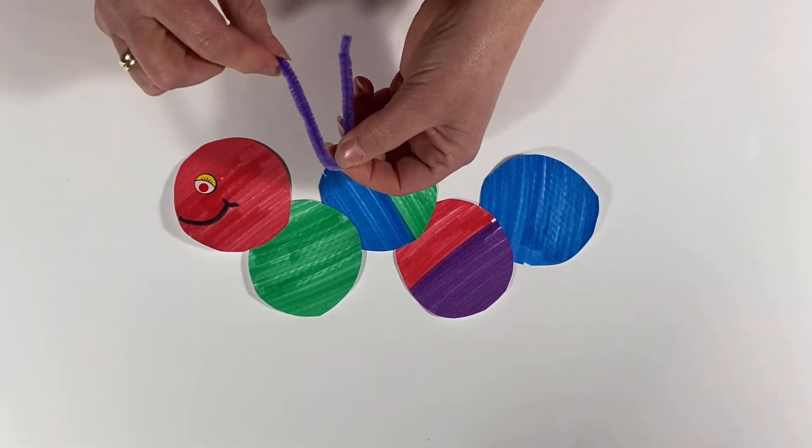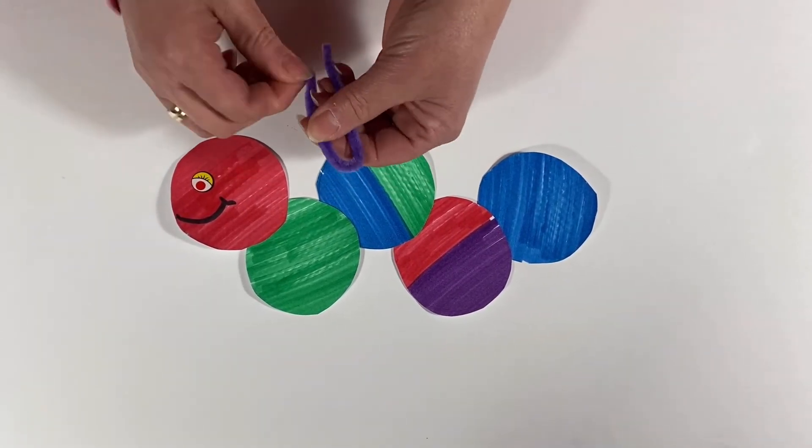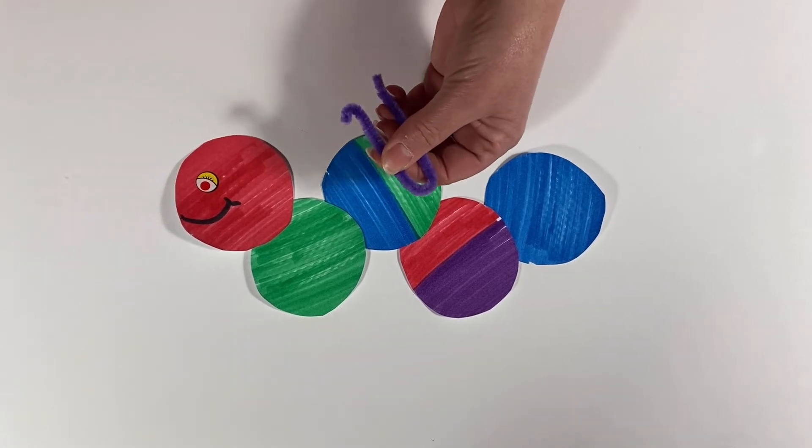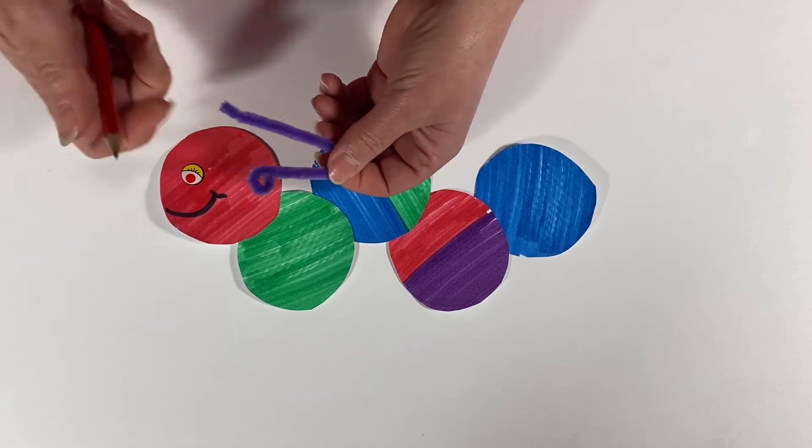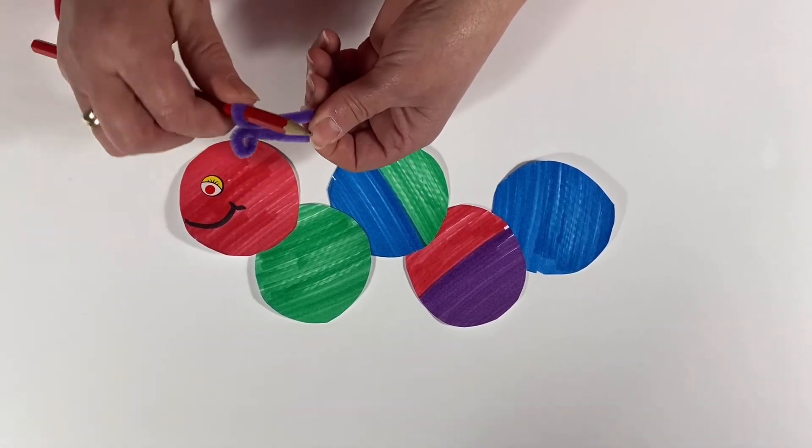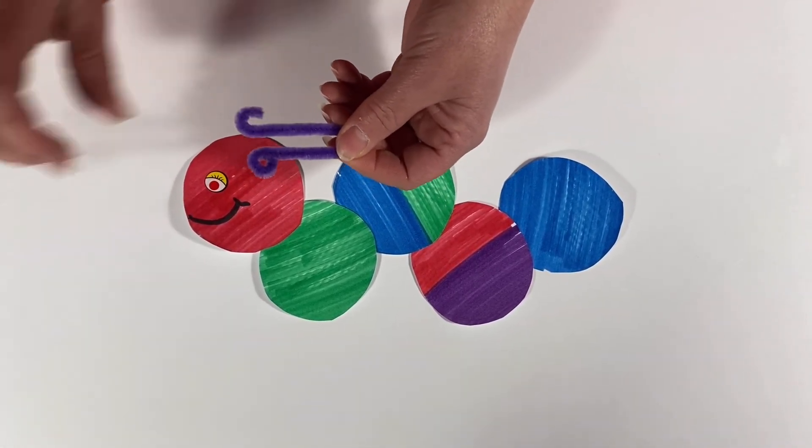At the end you can turn them. Sometimes it might be easy if you get a pencil and wrap it around it to get a swirl, and they don't have to be the same height either. It's one a wee bit taller.